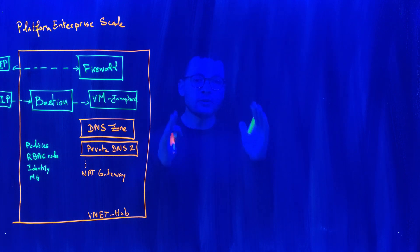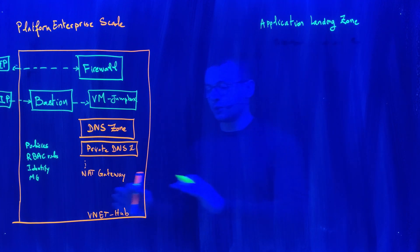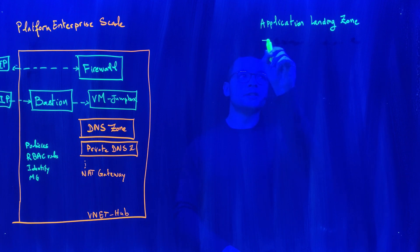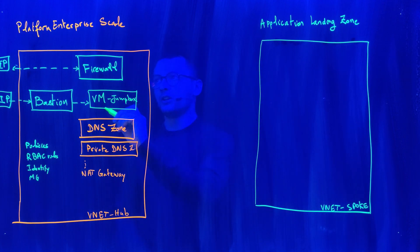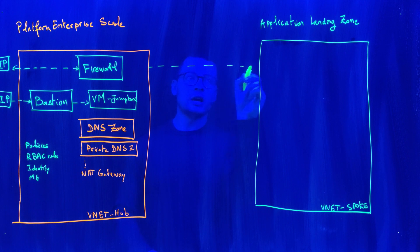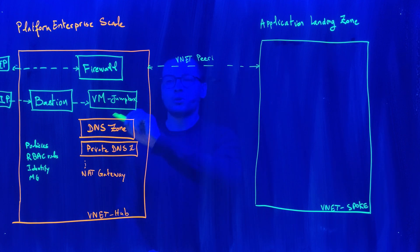On the other hand, we will find the application landing zone — in our case, that's going to be the AKS landing zone. The application landing zone is represented by a spoke virtual network, so all of this lives inside its own virtual network called the VNet for the spoke. This spoke virtual network is connected to the hub virtual network through VNet peering in both directions, meaning resources from either side can connect to the other.